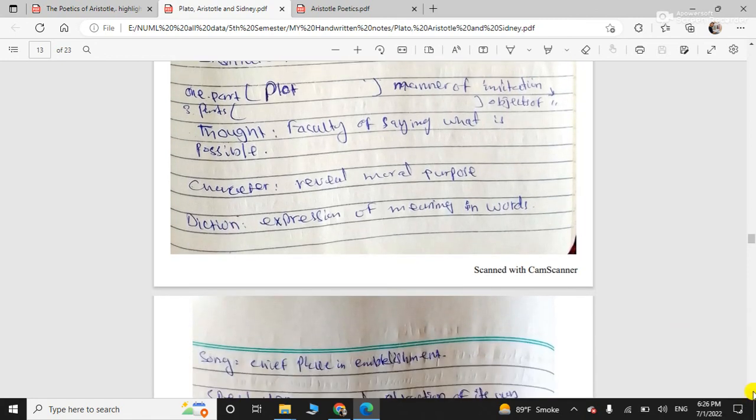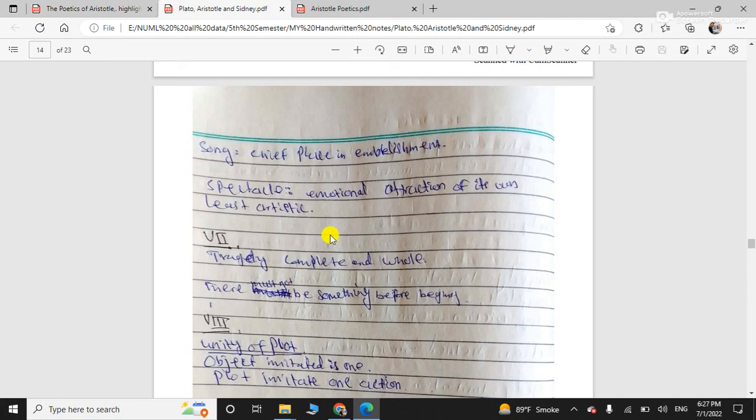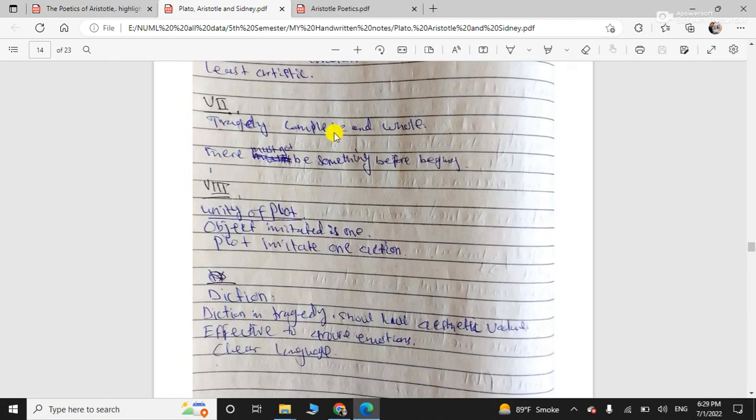So plot I discussed. Characters also I discussed. Character, how should it be? Language, how should it be? And then comes the song. Song and spectacle these are the minor parts. Not important. Song has chief place in embellishment and spectacle. He says that tragedy should be complete and whole. It must not have to be something before beginning. So he talks about unity of plot. Object imitated is one. And plot imitates one action. This is called unity. Diction and language we discussed above. So these are some important points of Poetics.